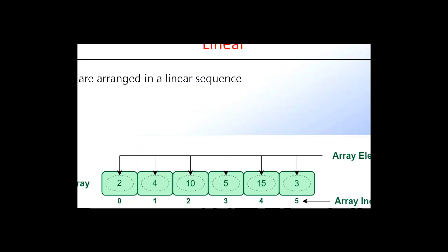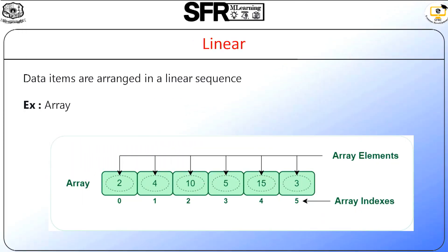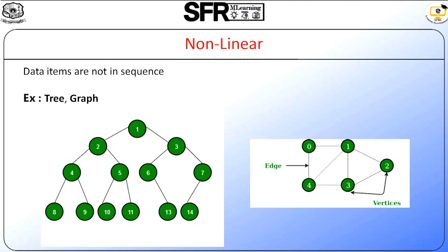Linear means the arrangement of data in a linear sequence. Consider an array — the elements are arranged in a linear sequence, such as 2, 4, 10, etc., with indexes starting from 0 to 5 in this sample. Non-linear means the data items are not arranged in a sequence. Examples of non-linear structures are trees and graphs.